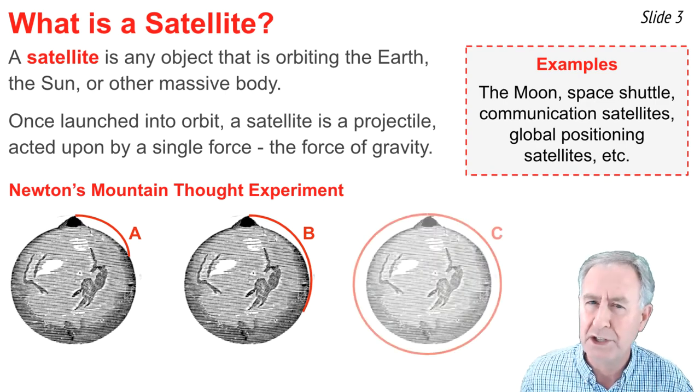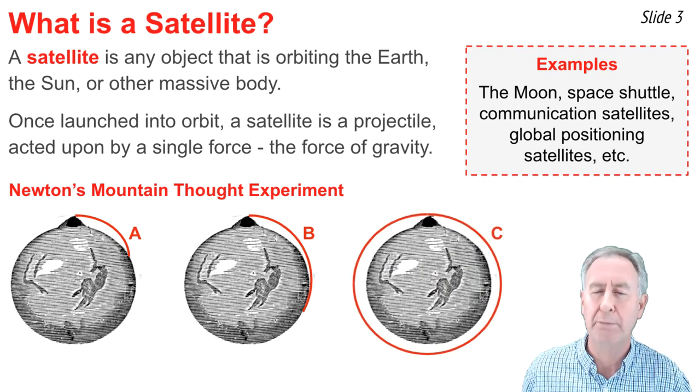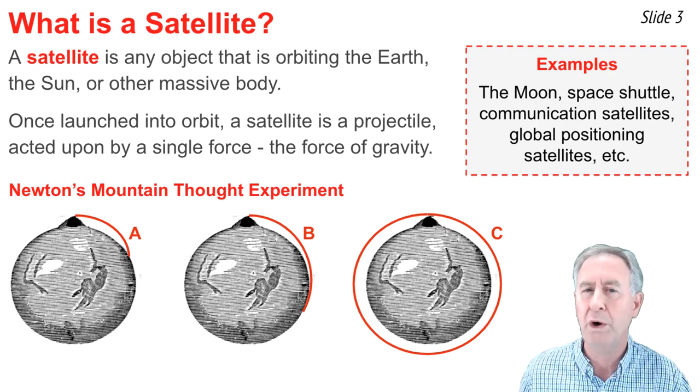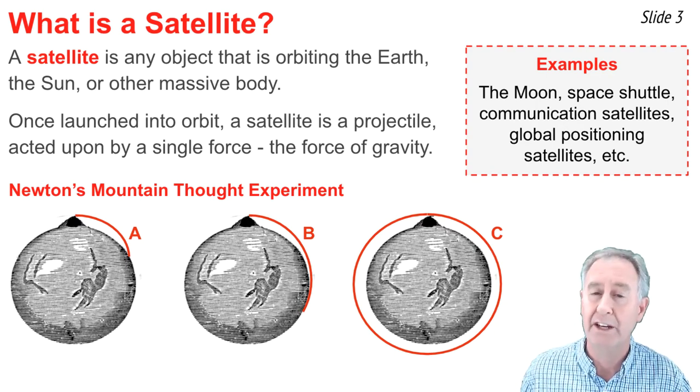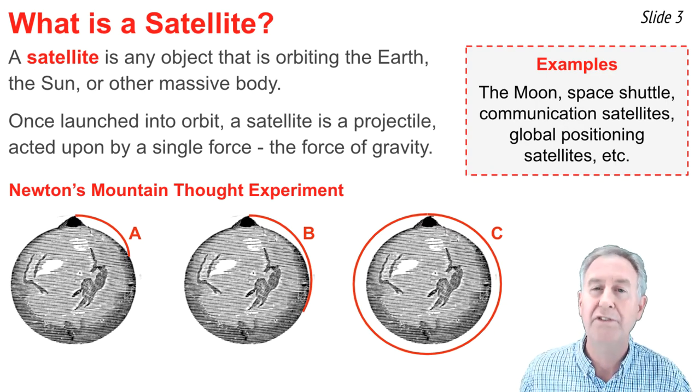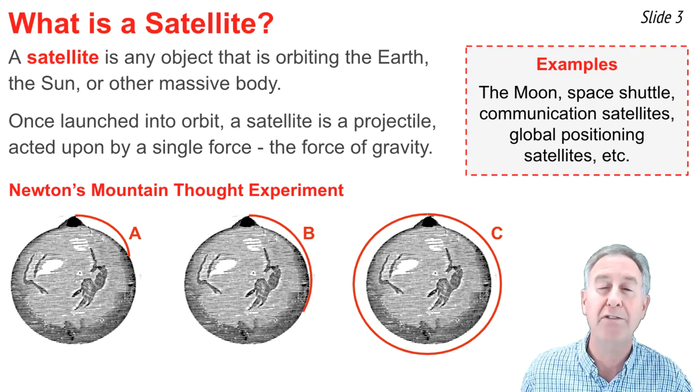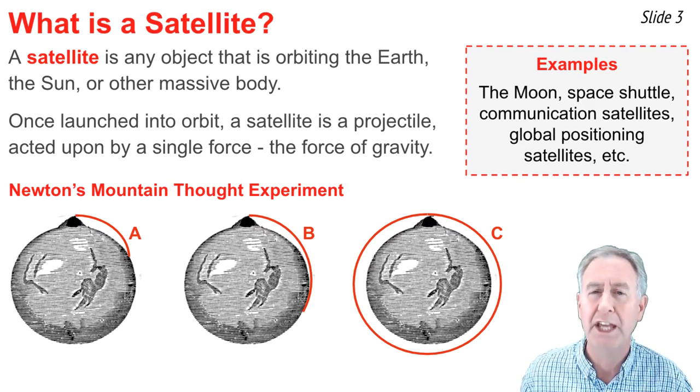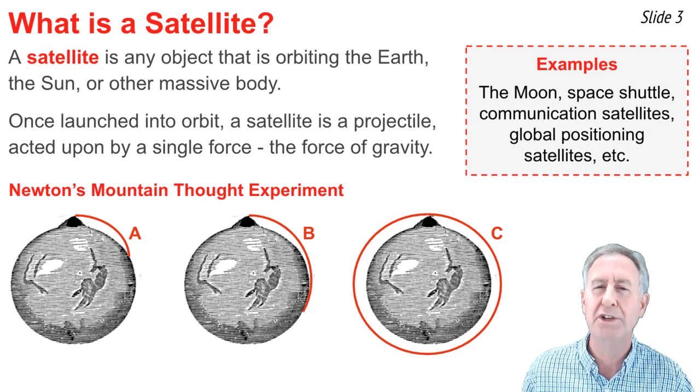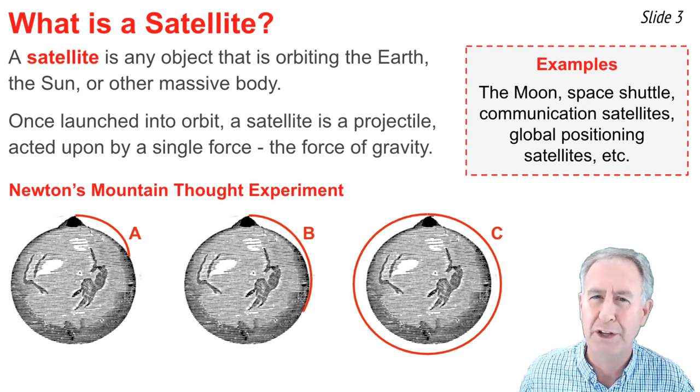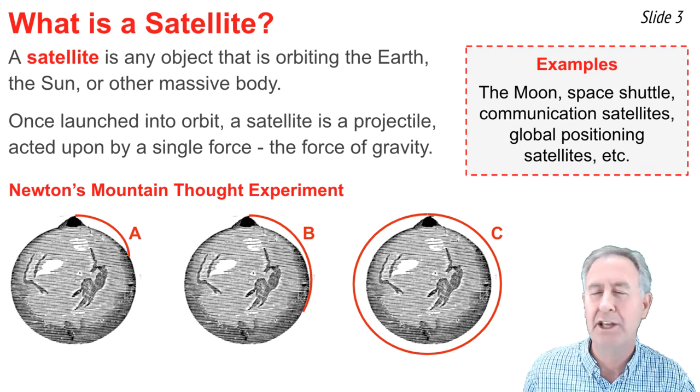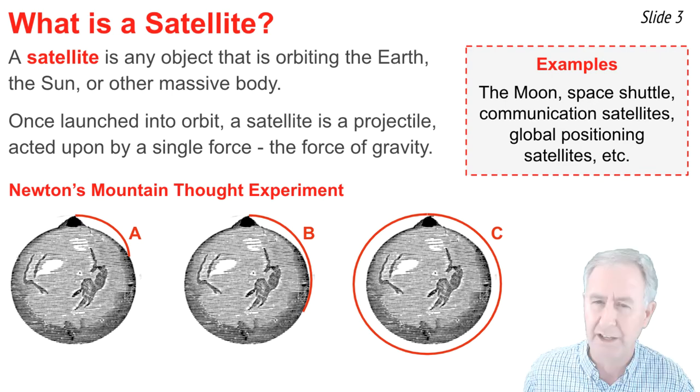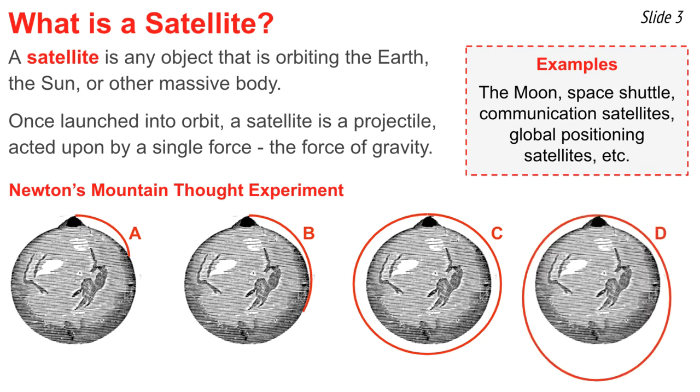He imagined that there could be such a speed that you could fire the cannonball at, that it would fall towards the Earth, but never land on the Earth. Relative to the straight-line tangent path at every point along its trajectory, it would begin to fall, but never touch the Earth, because its curvature matched the curvature of the Earth. And then he imagined that you could fire it a little faster still, and such a cannonball would make an elliptical path around the surface of the Earth.